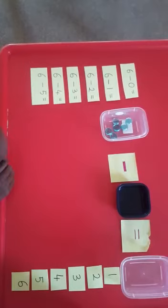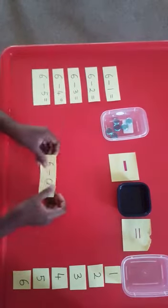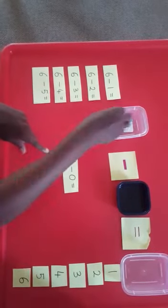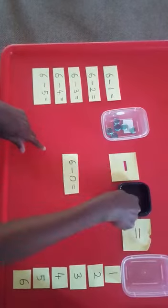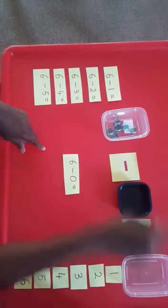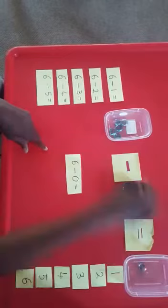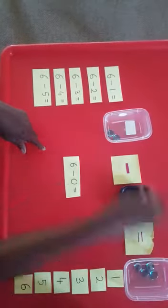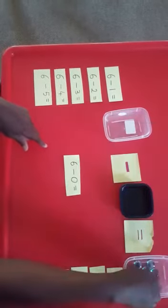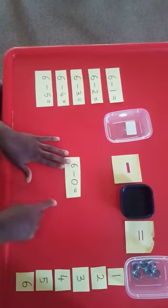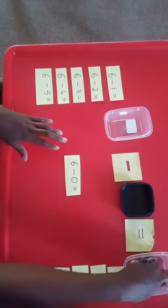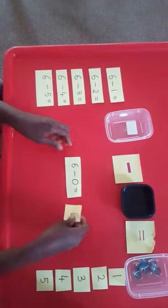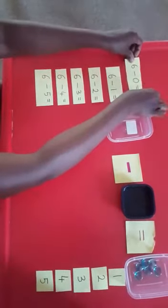So over here we've got six stones. I'll take my first equation — it says six take away zero. So six take away zero equals one, two, three, four, five, six. Six take away zero equals six.